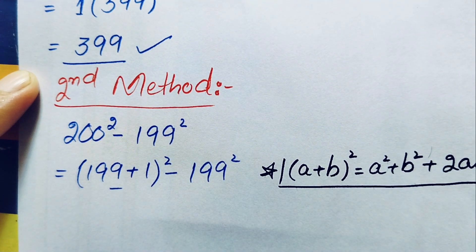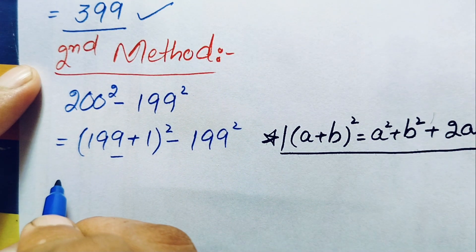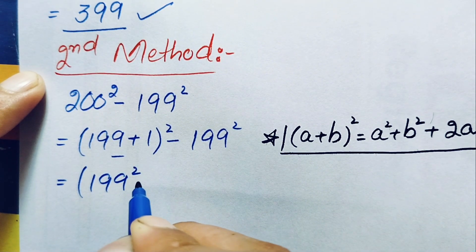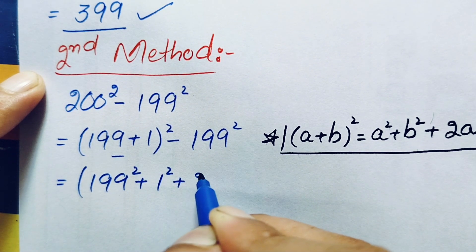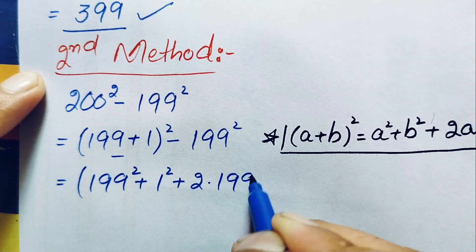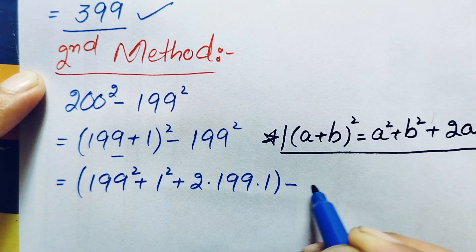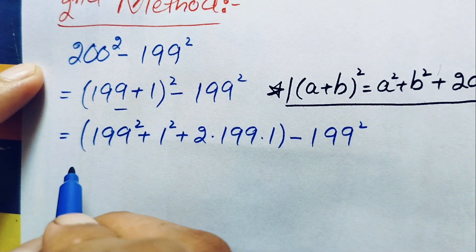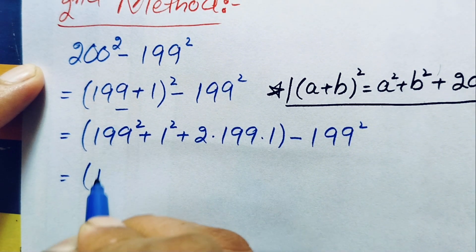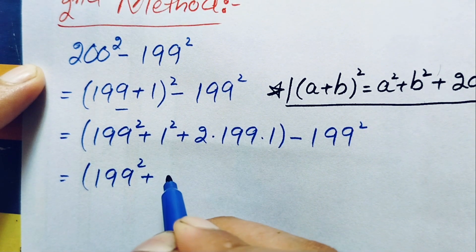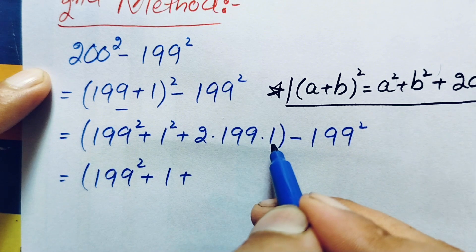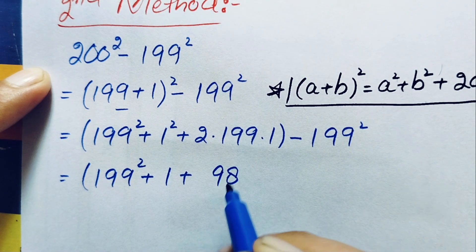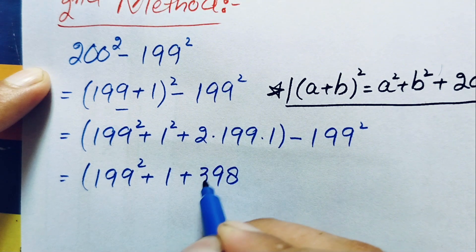Using this identity, where a is 199 and b is 1, this becomes 199 squared plus 1 squared plus 2 times 199 times 1, minus 199 squared. Simplifying: 1 squared is 1, and 2 times 199 is 398. So inside the parenthesis we have 199 squared plus 1 plus 398.